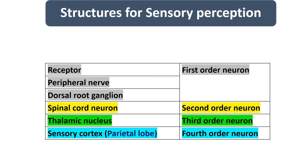Structures involved in sensory perception begin from receptors in the skin and mucous membrane as thermoreceptors, and in muscle and tendon as mechanoreceptors. These travel to the peripheral nerve and dorsal root ganglia, considered the first order neuron. Then the second order is in the spinal cord, followed by the brainstem, then the thalamic nucleus as the third order, and finally the sensory cortex in the parietal lobe as the fourth order neuron.